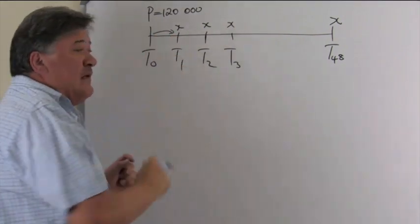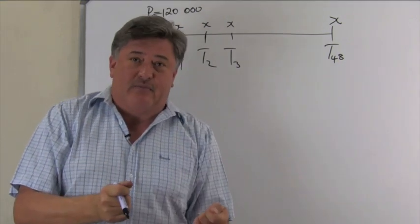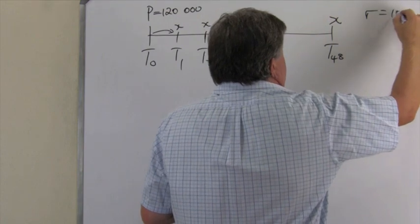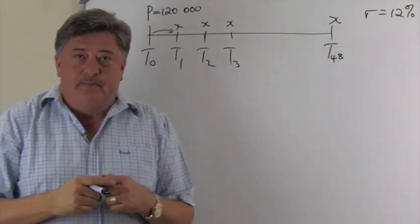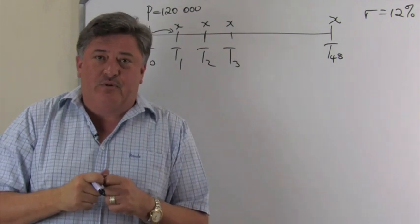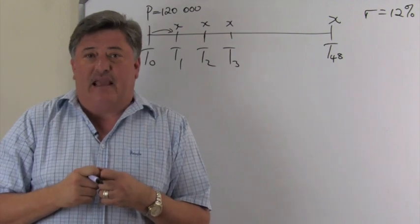Remember, this one month gap always, between when the loan is granted and your first payment. Interest rate, please remember, 12% per annum compounded monthly. This is a present value annuity. So, we're going to use our present value annuity formula, and we're going to find X.